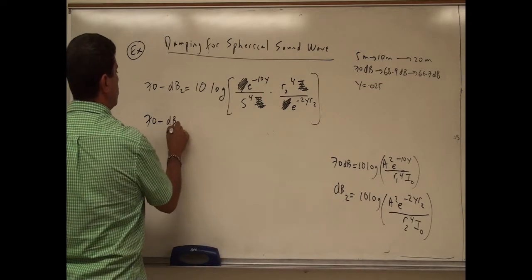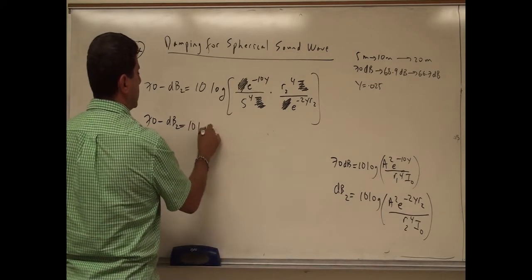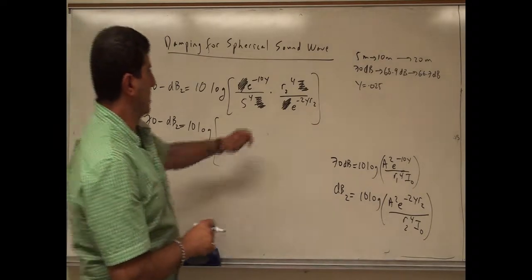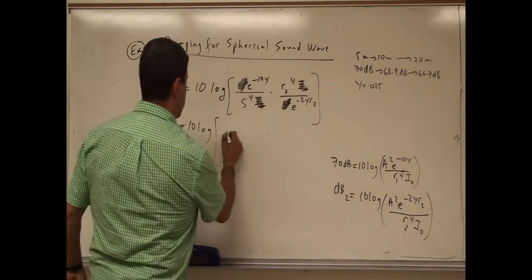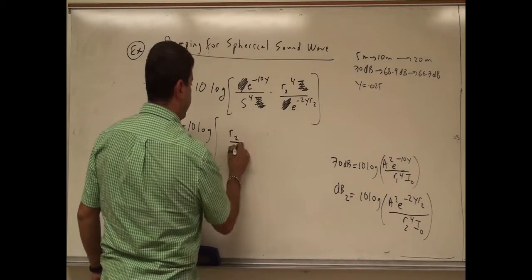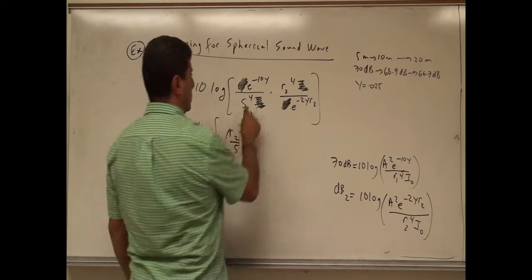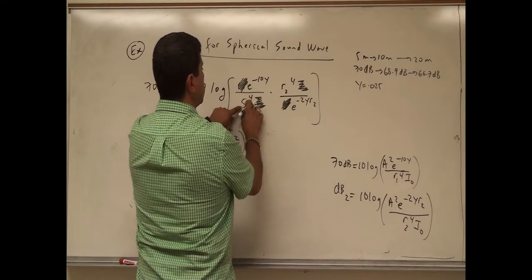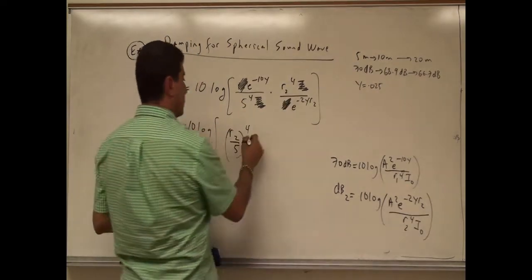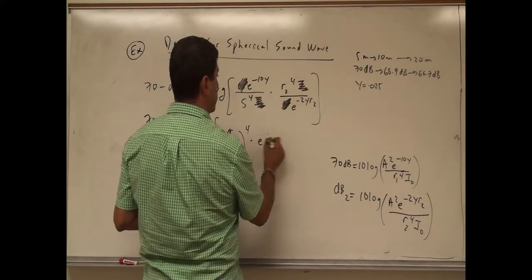70 minus db2 is going to be 10 log of, let's rewrite it this way. Let's do here R2 divided by 5 to the power of 4. So then I can just divide this and then raise both of them to the power of 4.